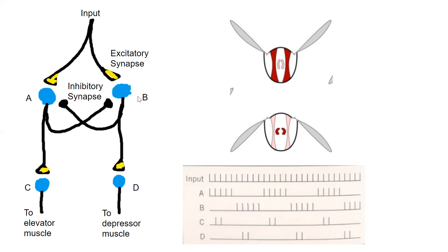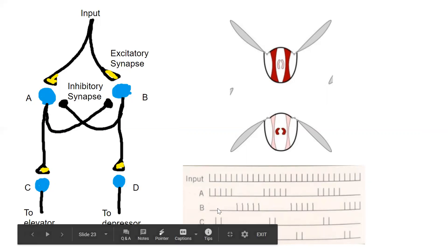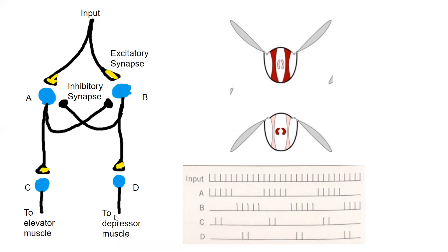And so it kind of goes on in a cycle getting you these. So it's the signal of A and notice B isn't signaling at all. Then you have the signal B when A isn't signaling, and then they send the signal to the elevator muscle and the depressor muscle.